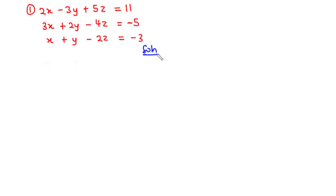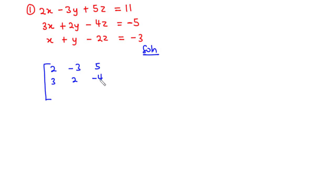The first thing we are going to do is represent this set of linear equations in the form of an augmented matrix. Inside the matrix, we have the coefficients of the unknown variables x, y, z. Equation 1 goes for row 1, equation 2 for row 2, and equation 3 for row 3. So we have 2, negative 3, 5, then 3, 2, negative 4, then 1, 1, negative 2. We separate the constants on the right-hand side with a vertical bar: 11, negative 5, negative 3.